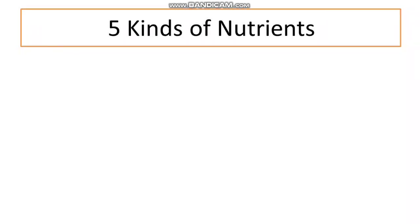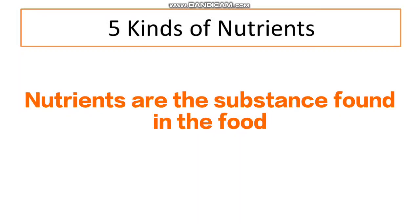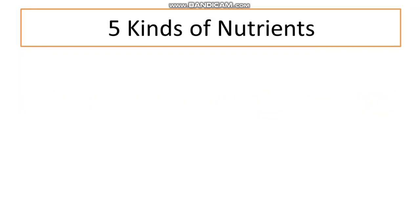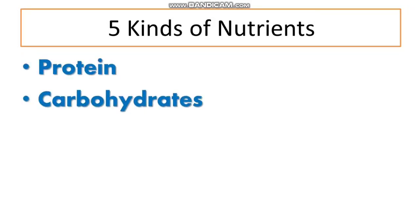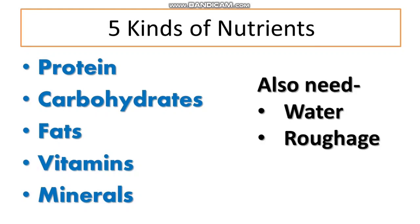Hello students, welcome back. Today we are going to continue our lesson number two, that is food and its digestion. In the last video we have seen that there are five kinds of nutrients. Nutrients are the substances present in food, and the five kinds were protein, carbohydrates, fats, vitamins, and minerals. But other than these five kinds of nutrients, our body also requires water and roughage.